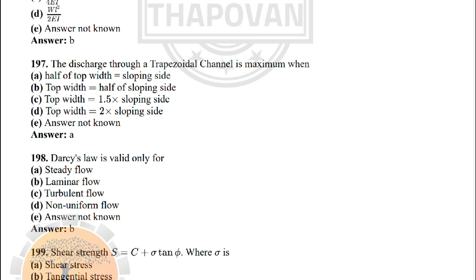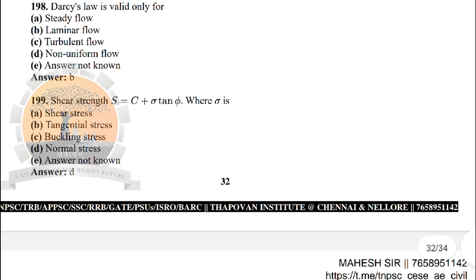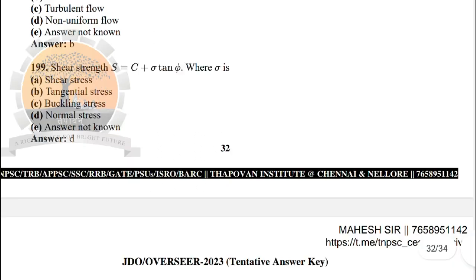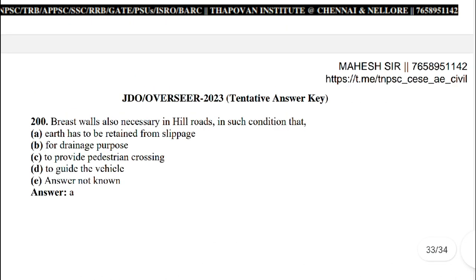Next: Darcy's law is valid only for — option A: laminar flow. Next: shear strength S = c + σ tan φ, where σ is normal stress — option D. Next: breast walls are also necessary for hill roads in such conditions where — the correct answer is option A: earth has to be retained from slippage.